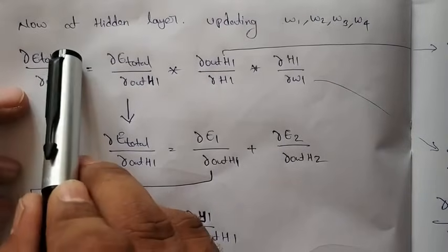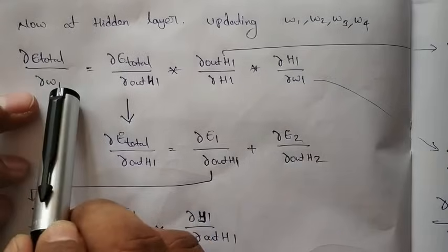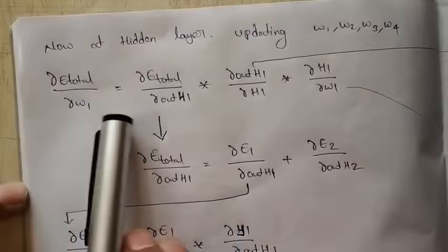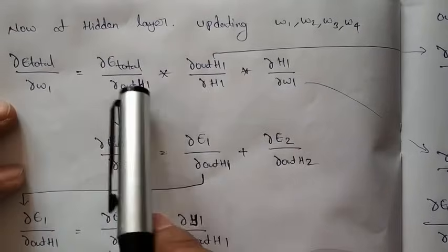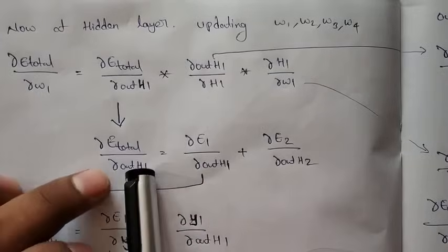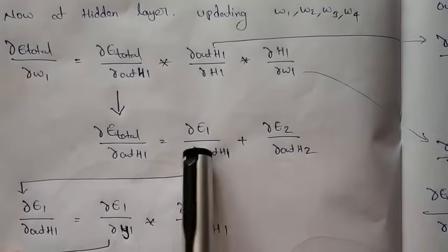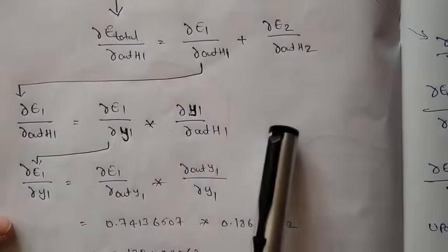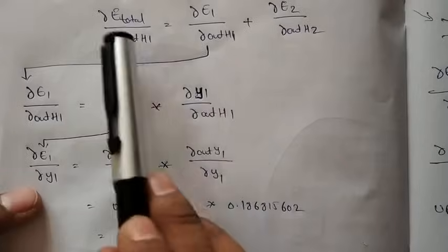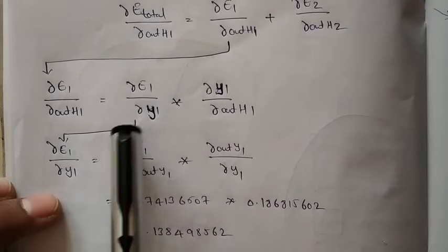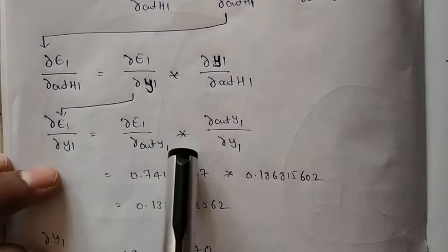For updating w1, in the same way, we partial differentiate the error with respect to w1: ∂E_total / ∂w1. But directly in E_total, there is no term w1, so we again split this. We split ∂E_total / ∂out_h1 further, because we cannot calculate ∂E_total / ∂out_h1 directly. So we keep splitting again and again until the terms become calculable. Don't worry — if you see it slowly, you will understand. We split multiple times until each term gets into a calculable form.